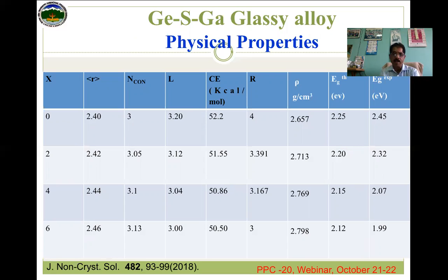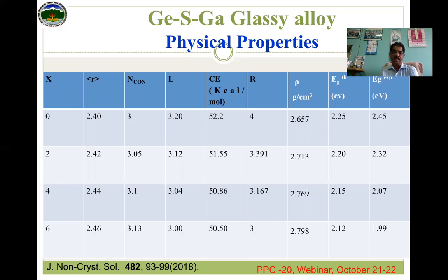First we will discuss physical properties, because they provide an insight into whether the material we prepare will meet our goals. Several parameters have been evaluated using empirical relations from the literature. The columns include: concentration, coordination number, number of lone pairs, cohesive energy, floppy modes, density, and optical band gap — both theoretically and experimentally calculated. We found that the coordination number r is greater than 2.4 and the number of lone pairs L is much greater than one, meaning our material is a good glass former with thermal stability. Density increases while the optical band gap decreases with increasing gallium concentration. This paper is published in the Journal of Non-Crystalline Solids.